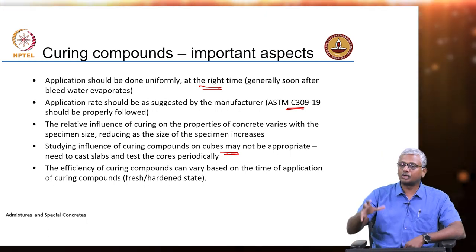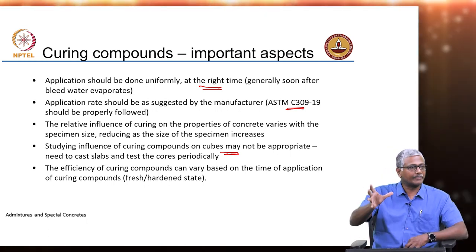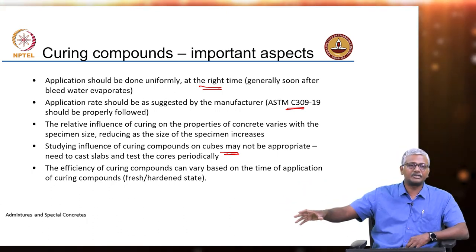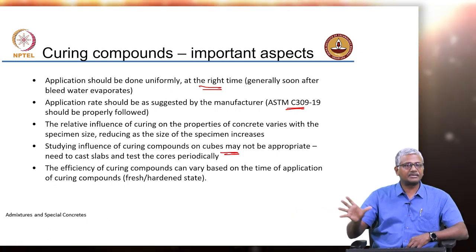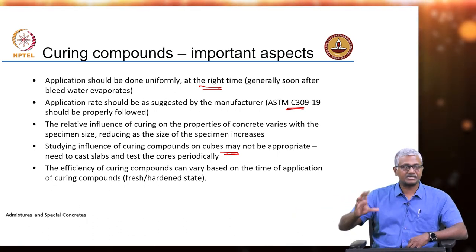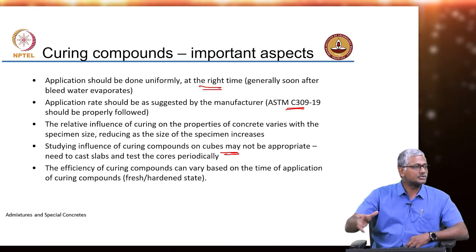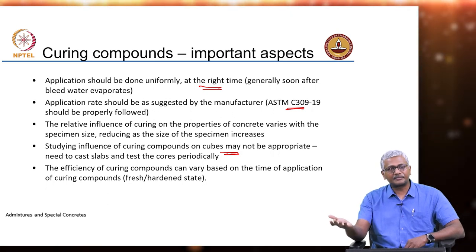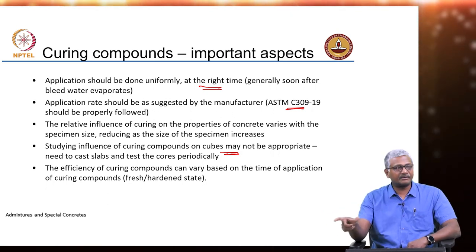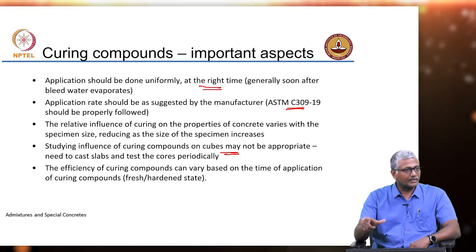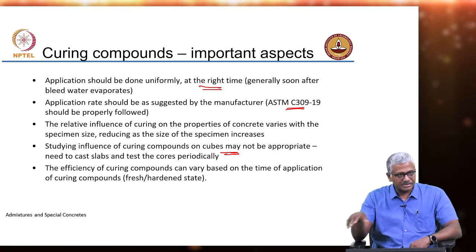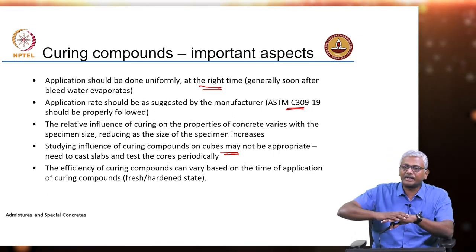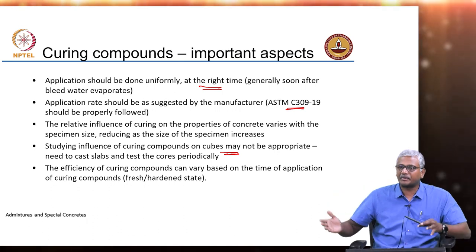For instance, if you take a cube, demold it at one day, and instead of putting it inside a moist curing chamber or under water, you spray the curing compound on all sides and then store it in air-dry conditions until testing at 28 days — that will be the efficiency test done on cubes. But if you do a slab, and you cast a large slab and spray the top surface with curing compound, your drying is only happening through one surface — all the other parts of the slab are protected.